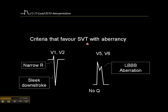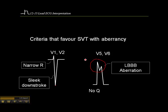The criteria that favor SVT with aberrancy — aberrancy meaning abnormal conduction resulting in a wide QRS — would be a very narrow R-wave in V1 and a sleek downstroke without any slurring, so the distance between the onset of the QRS and the tip of the S-wave is very short, less than 0.06 second. Also, if you see a bundle branch block pattern in V5 and V6 without any Q-waves, that also favors a bundle branch block, and consequently a supraventricular tachycardia with aberrancy.